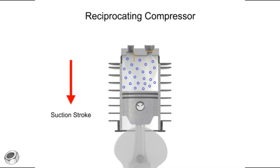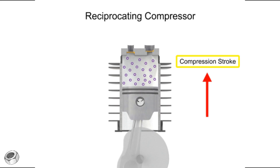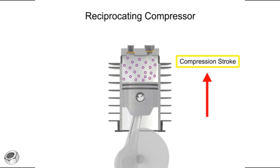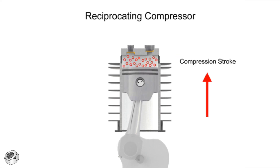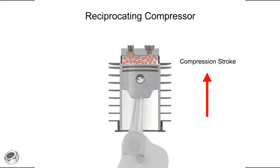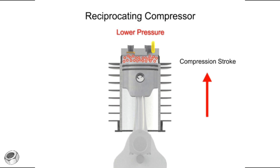As the piston begins its upward compression stroke, the volume within the cylinder decreases. The decrease in volume causes the pressure within the cylinder to increase. The increase in pressure opens the outlet valve and compressed air discharges from the cylinder.